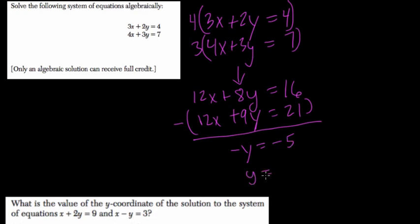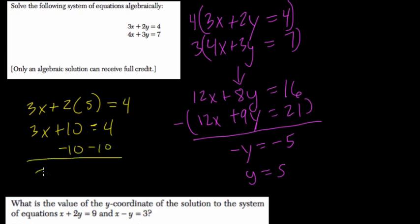We can plug that in to find x. We know 3x plus 2y, so 2 times 5, equals 4. So 3x plus 10 equals 4. Subtract 10 from both sides, we get 3x equals negative 6.